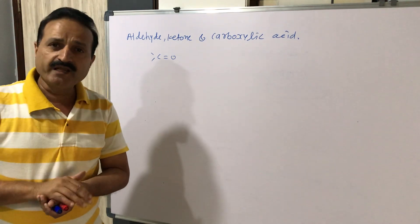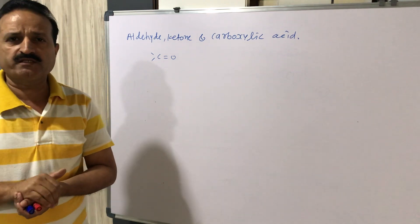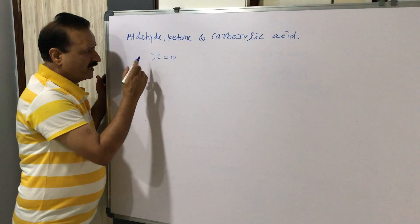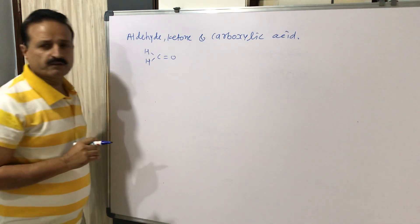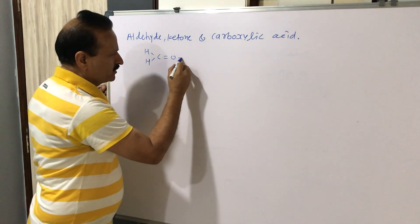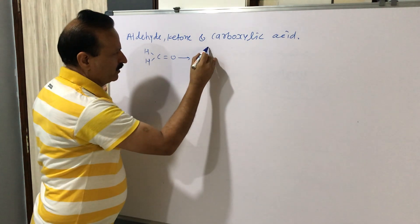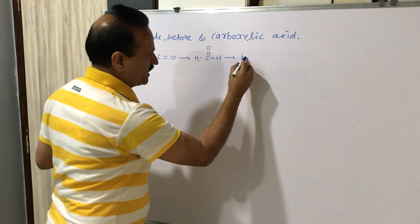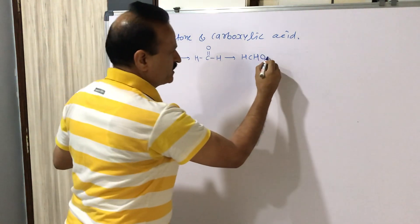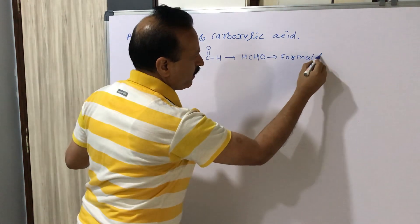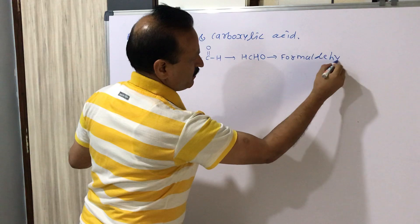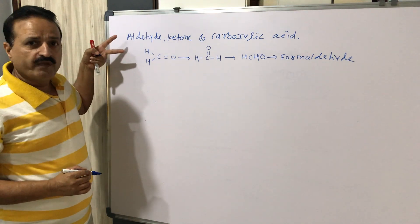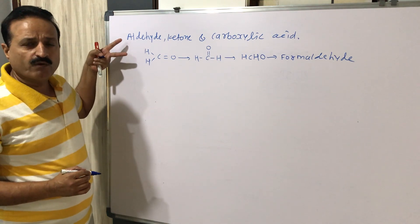We will understand how we can form Aldehyde, Ketone, and Carboxylic Acid from the Carbonyl group. If both the valences of Carbonyl Carbon are satisfied by Hydrogen, we get the structure H-C(=O)-H, which is formaldehyde. Formaldehyde is the first member of the Aldehyde series.